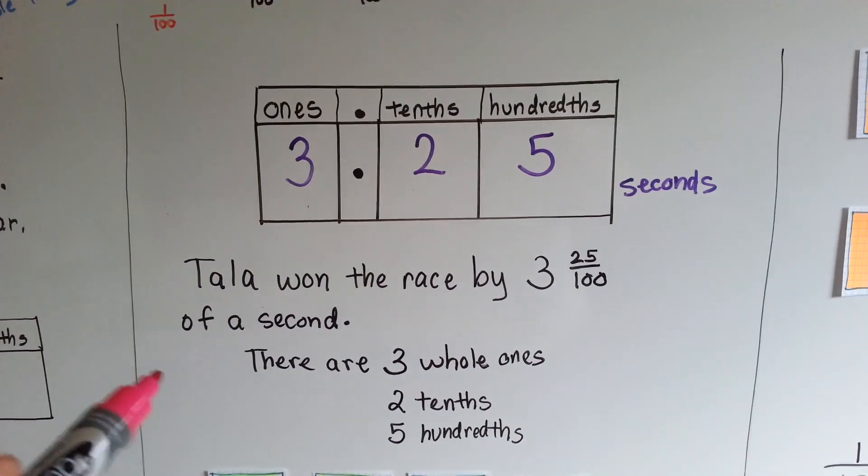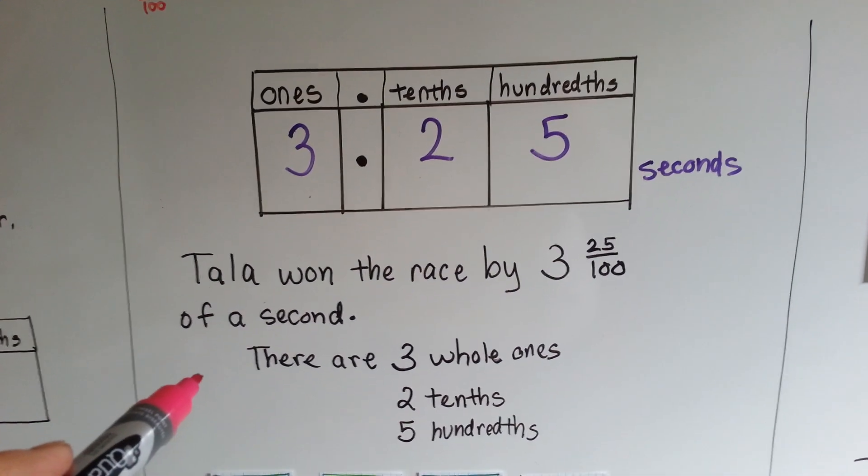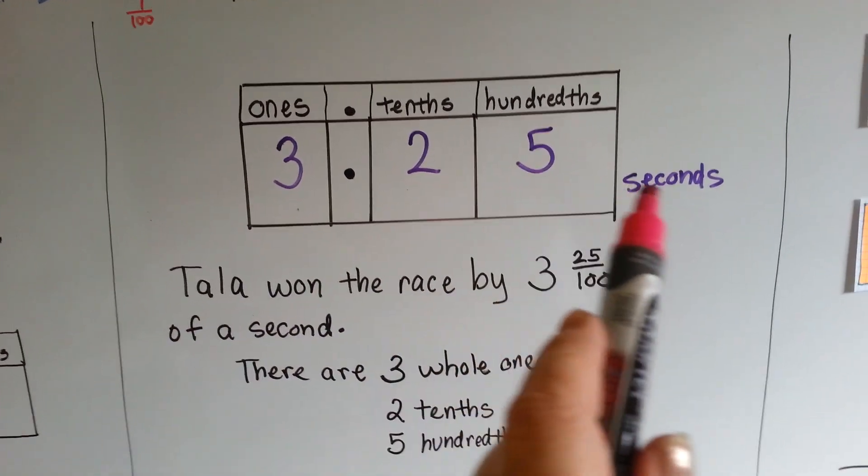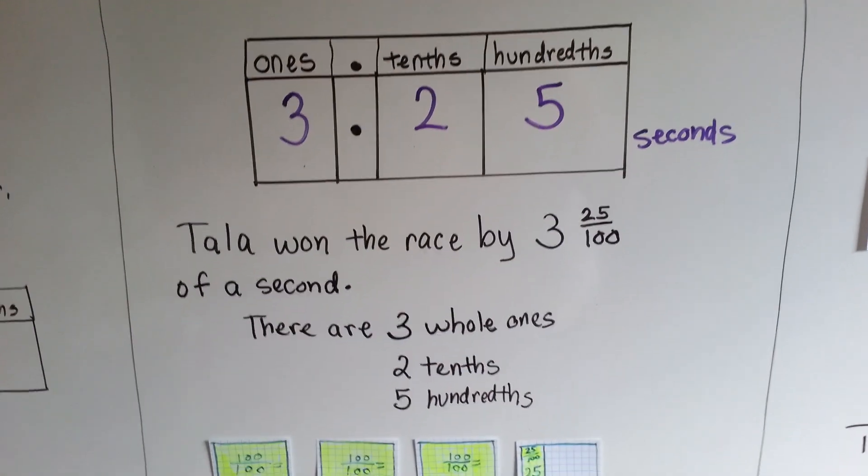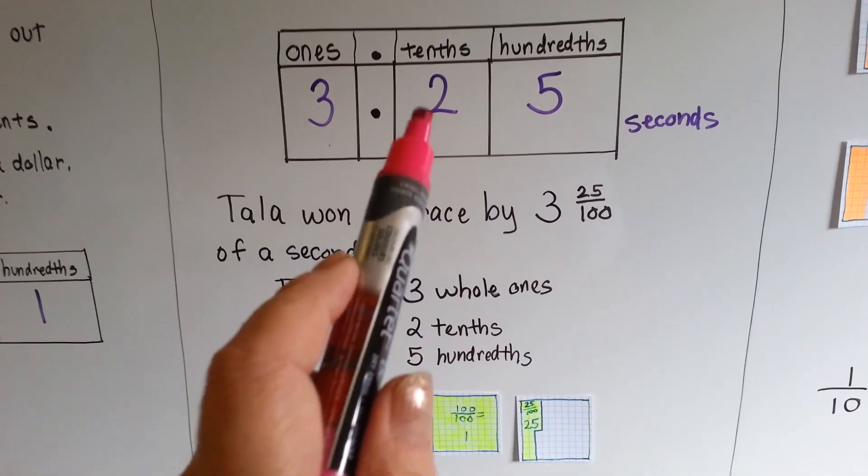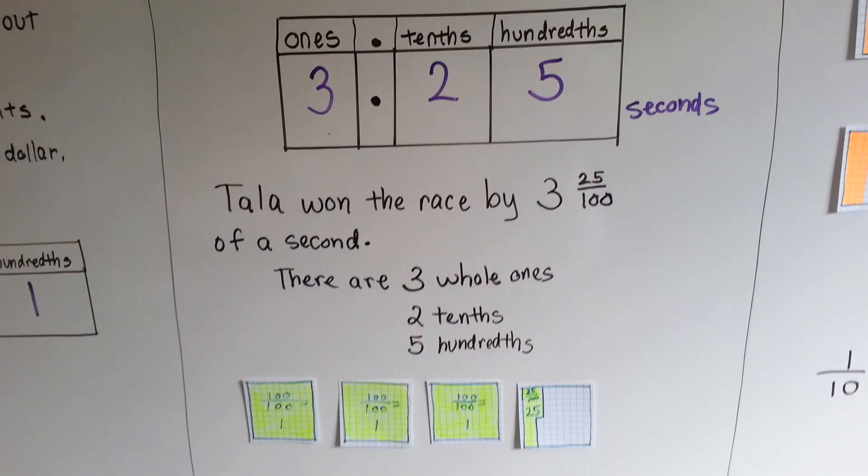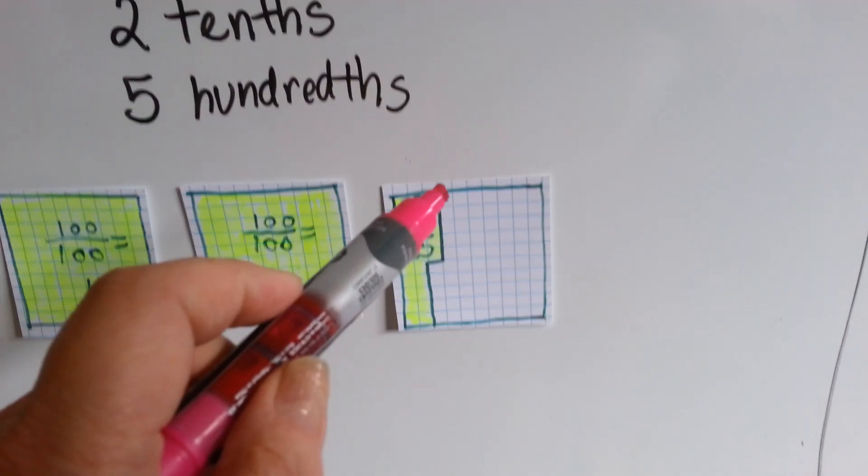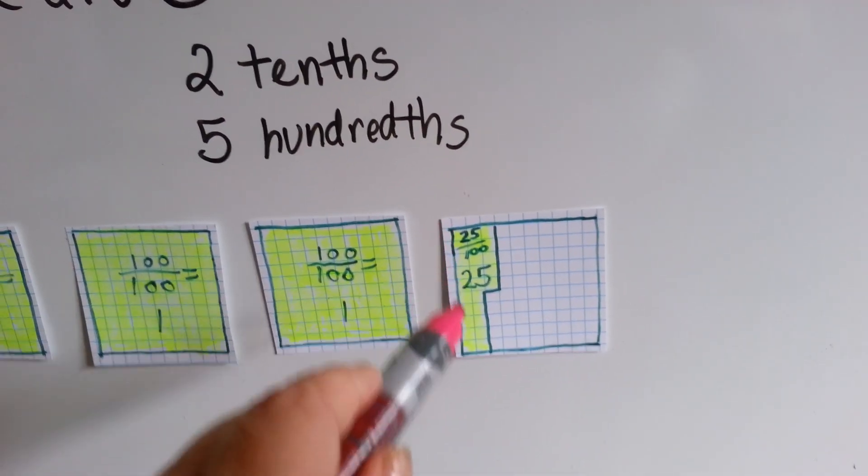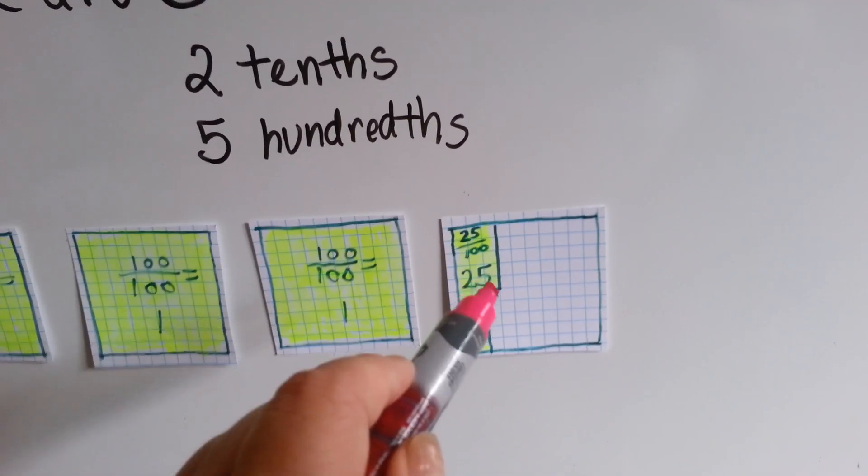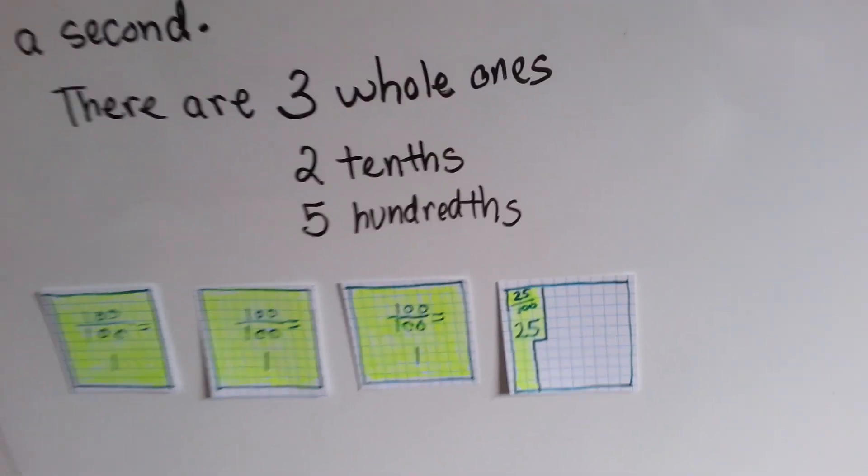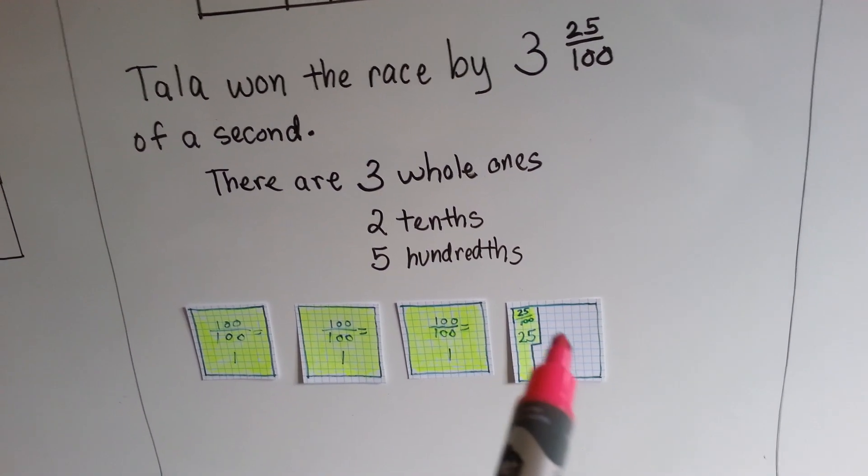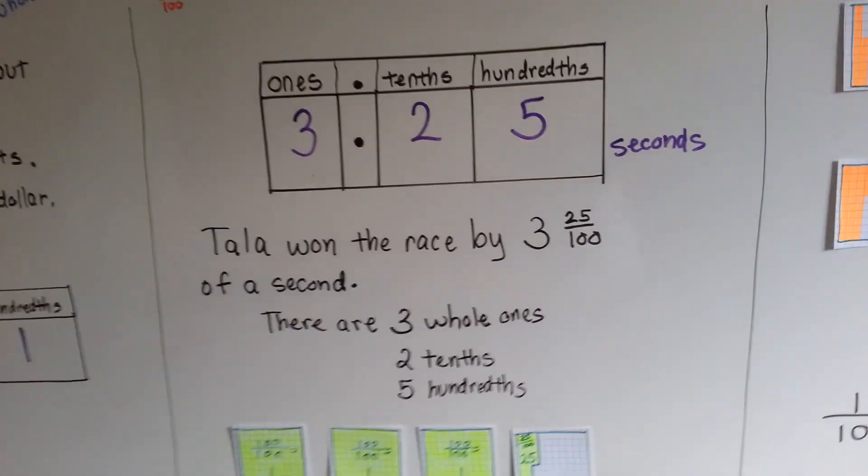If Tala won the race by three and twenty-five one hundredths of a second, it would look like this: three and twenty-five hundredths seconds. That means there's three whole ones, two tenths, and five hundredths. Three whole ones, and if you look closely, each line coming down could be a tenth. That's ten, that's twenty, and half of one is twenty-five. Twenty, three, and twenty-five out of a hundred. Three point two five.